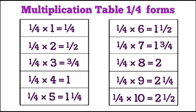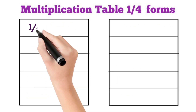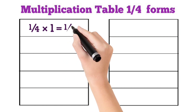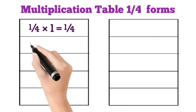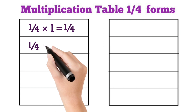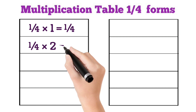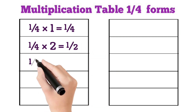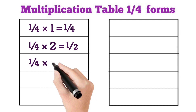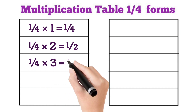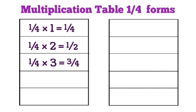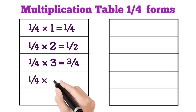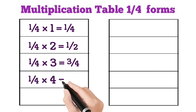Multiplication table 1 by 4 forms. 1 by 4 multiplied by 1 is equal to 1 by 4. 1 by 4 multiplied by 2 is equal to 1 by 2. 1 by 4 multiplied by 3 is equal to 3 by 4. 1 by 4 multiplied by 4 is equal to 1.